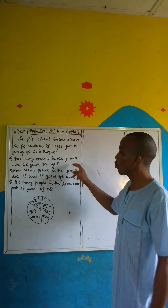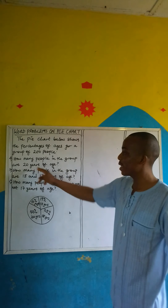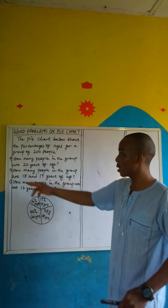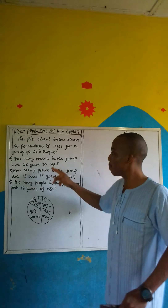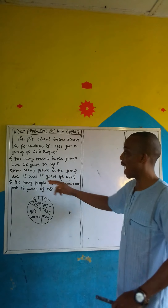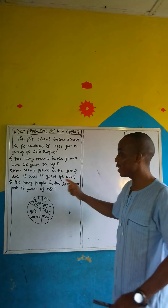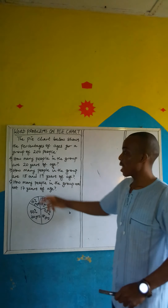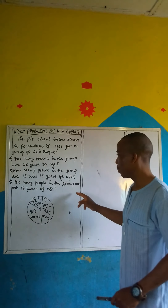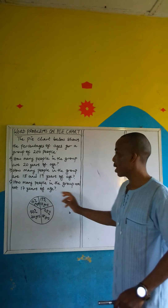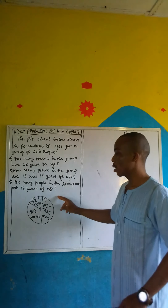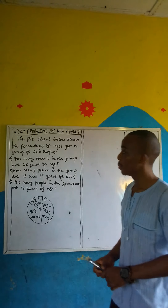The questions are: how many people in the group are 20 years of age? How many people in the group are 18 and 19 years of age? And lastly, how many people in the group are not 17 years of age?